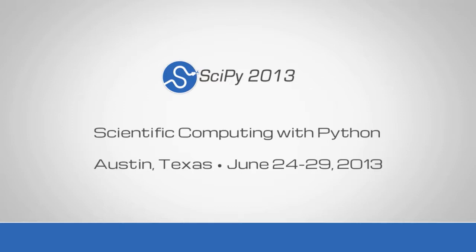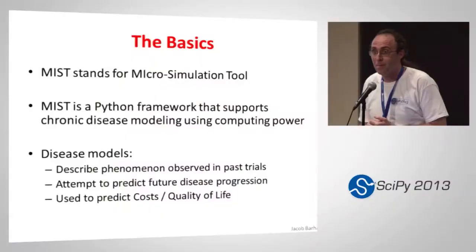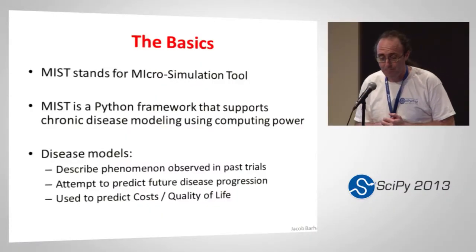My name is Jacob Barhak, and I'm going to talk about MIST. MIST stands for Microsimulation Tool. Microsimulation is a method used in disease modeling to simulate each individual separately and then combine all the information together to see what happened to the entire population. As you can understand, it's an embarrassingly parallel problem.